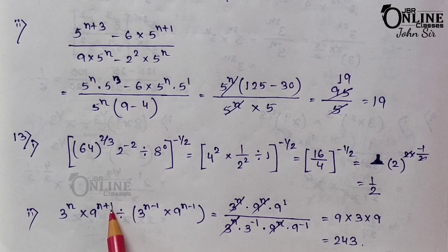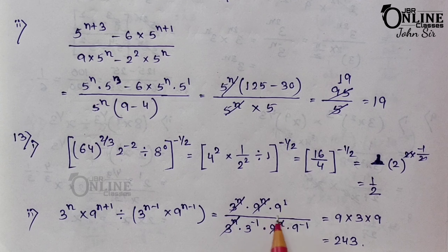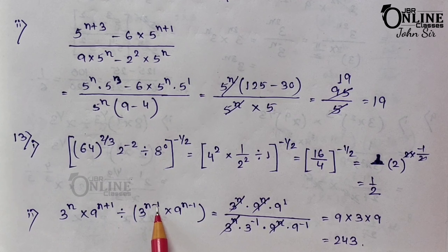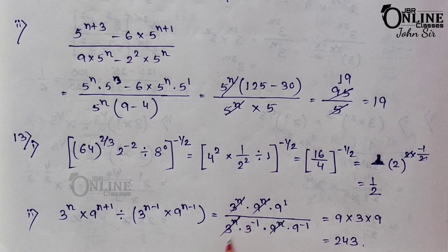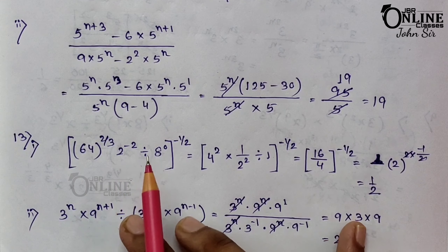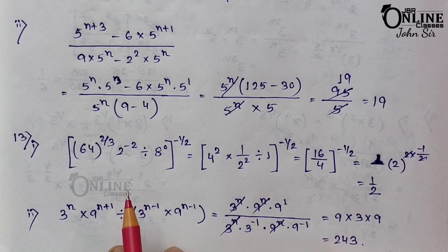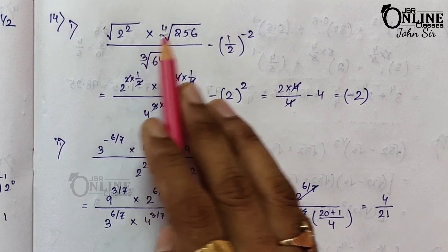Sum 13.2: [3^n × 9^(n+1)] / [3^(n−1) × 9^(n−1)]. Write 9^(n+1) = 9^n × 9 and 9^(n−1) = 9^n × 9^(−1). In denominator 3^(n−1) = 3^n × 3^(−1). Cancel 3^n and 9^n. Remaining: 9 × 3^(1) × 9 = 3 × 9 × 9 = 243.